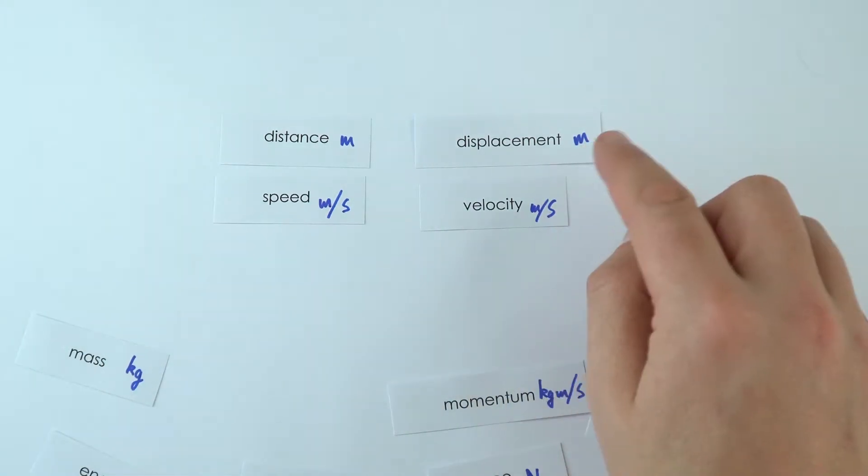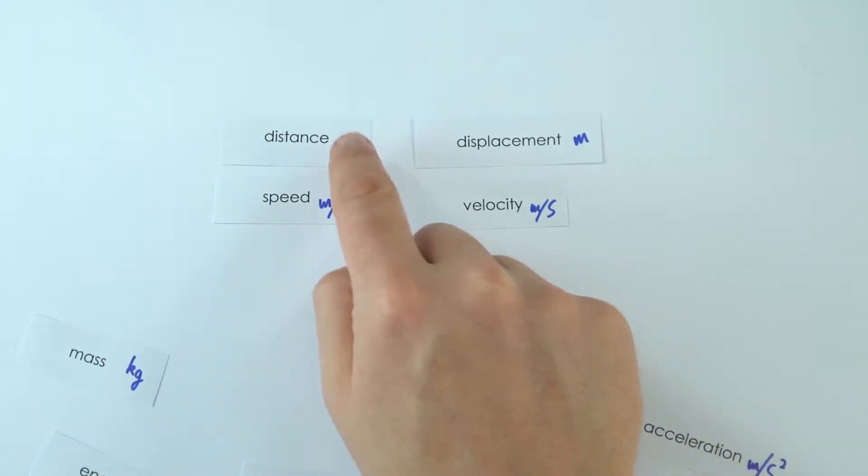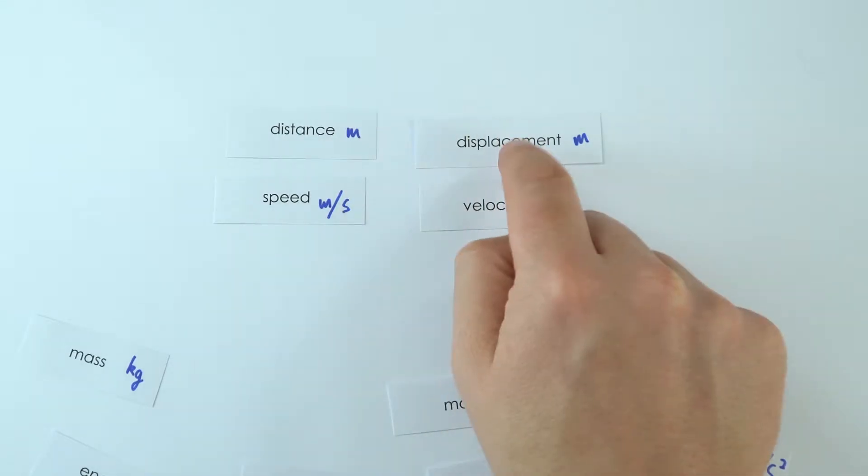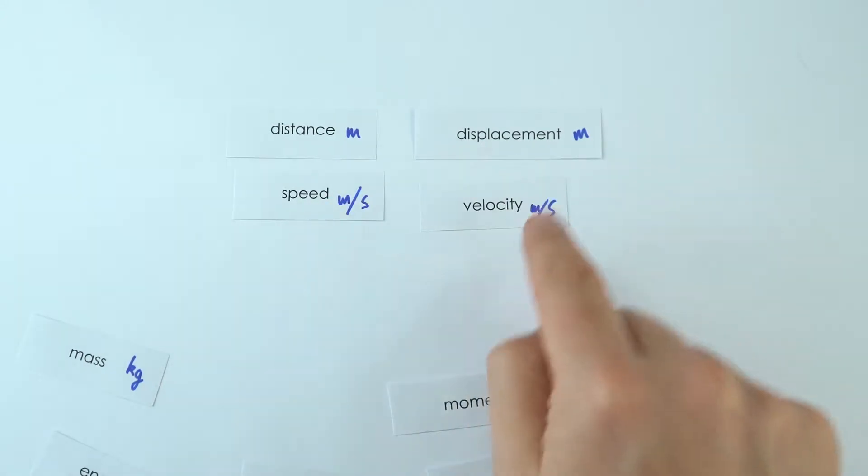But for some of them it's not just the size which is important, it's which direction that's acting in as well. Now distance is just how far something has gone, but displacement is how far something is in a certain direction. Speed is how quickly something is moving, and velocity is the speed in a given direction.